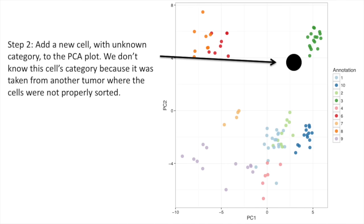Step 2. Add a new cell with unknown category to the plot. We don't know this cell's category because it was taken from another tumor where the cells were not properly sorted. So what we want to do is classify this new cell. We want to figure out what cell it's most similar to and then we're going to call it that type of cell.